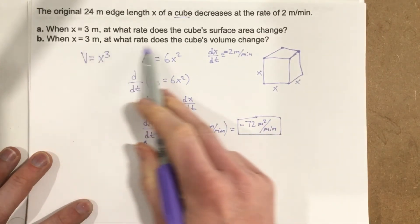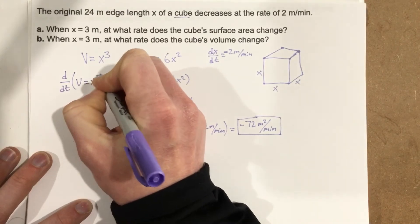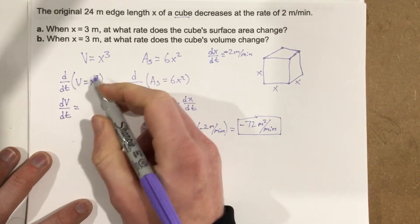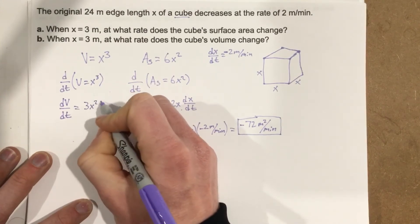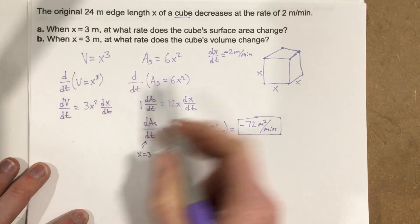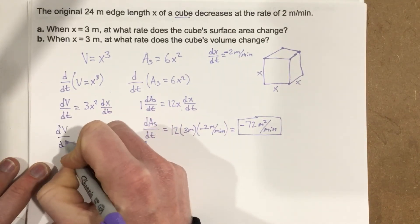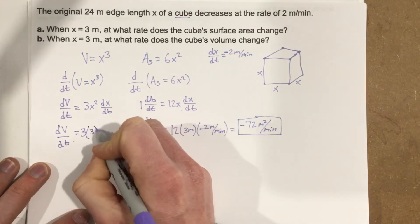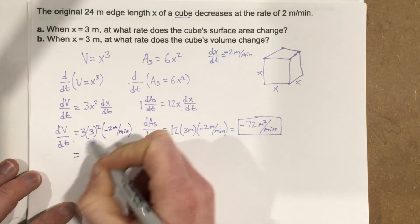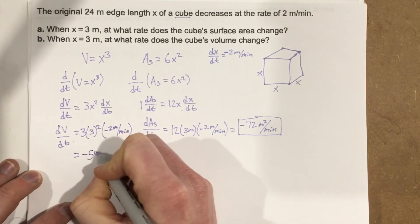Now let's find the volume piece, because part B asks for the cube's volume change. Taking the derivative with respect to time using implicit differentiation, DV over DT equals 3X squared times DX over DT. We plug in X equals 3 and DX over DT equals negative 2 meters per minute. So we get 3 times 3 squared times negative 2, which is 3 cubed equals 27, times negative 2, giving negative 54 meters cubed per minute.